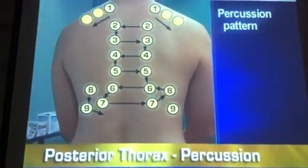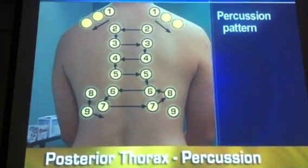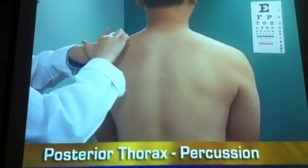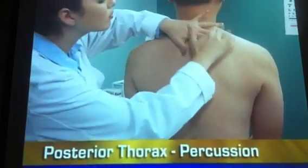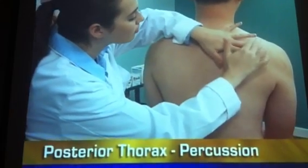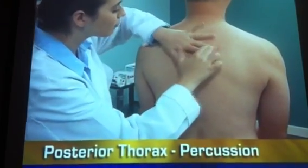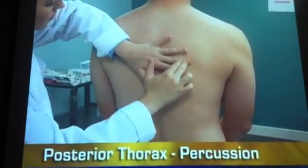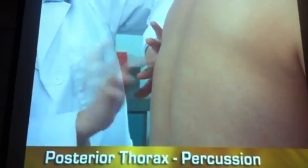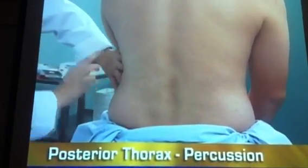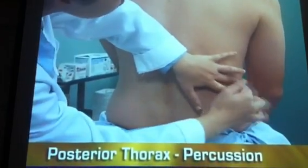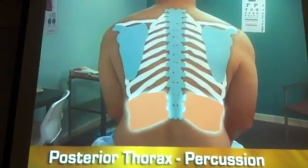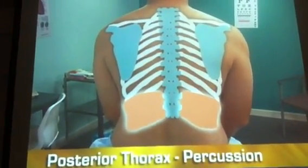To percuss the posterior thorax, follow a systematic pattern. Start at the apices and percuss across the tops of both shoulders. Then percuss in the interspaces, moving from side to side and down. In each area, note the intensity, pitch, and duration of the percussion notes. They should match side to side. Over the lungs, percussion should produce resonance. Over the viscera, percussion should cause dullness. Note any areas of abnormal dullness or hyper-resonance over the lungs.